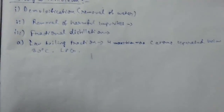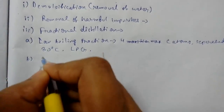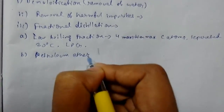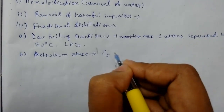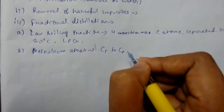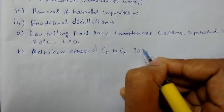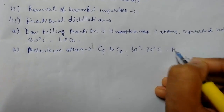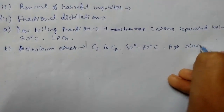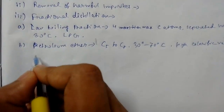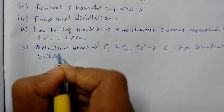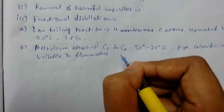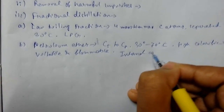LPG is mainly used as domestic fuel. Next, we obtain petroleum ether, which comprises carbon numbers C5 to C7 and has a boiling point of 30 to 70 degrees Celsius. It has a high calorific value and is highly volatile and flammable. It is used in internal combustion engines.